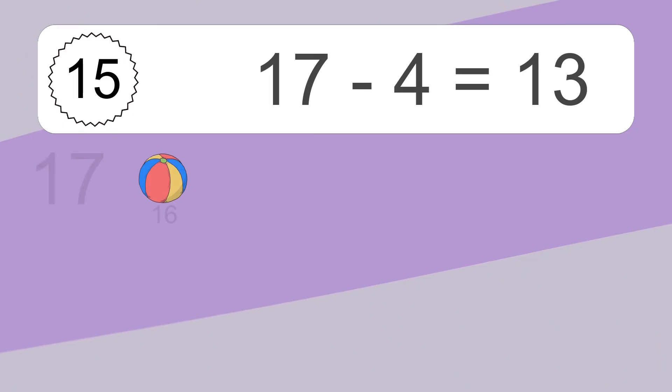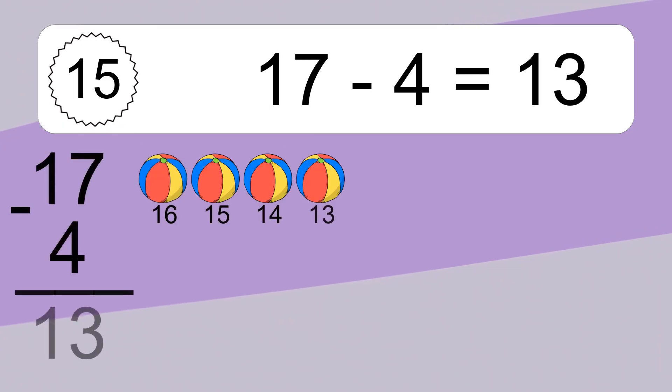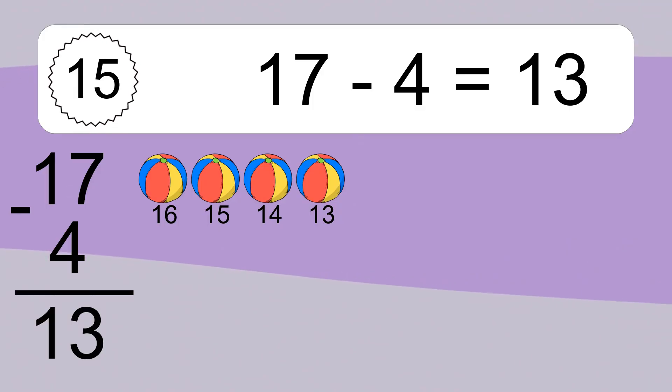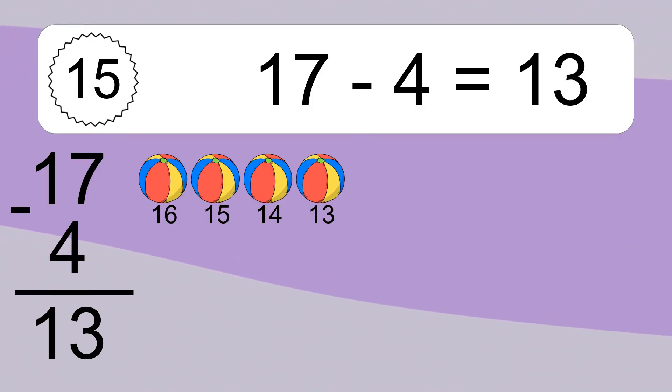17 minus 4 equals what? 17 minus 4 equals 13. Let's count it: 16, 15, 14, 13.